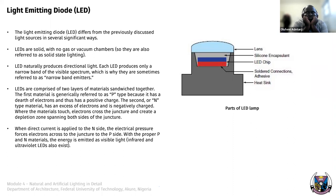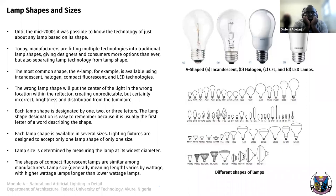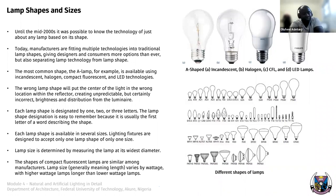Artificial light sources come in different types, shapes and sizes. We have to understand many of these shapes and sizes because some are round, some are flower-shaped, and there are many different shapes. Until the mid-2000s it was possible to know the technology of just about any lamp based on its shape — incandescent came in a particular shape, halogen in another, fluorescent in another.